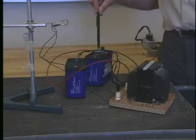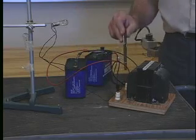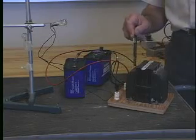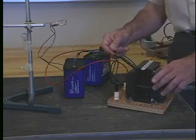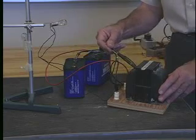What we have here is a circuit with two batteries in series to produce a current. The current flows through the terminals of this transformer and creates a magnetic field inside.